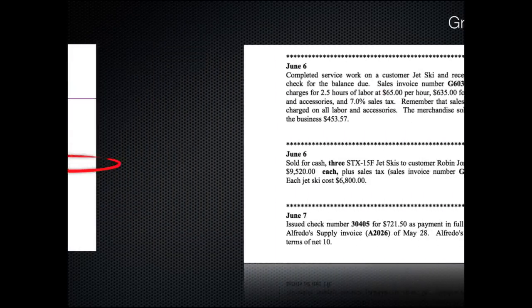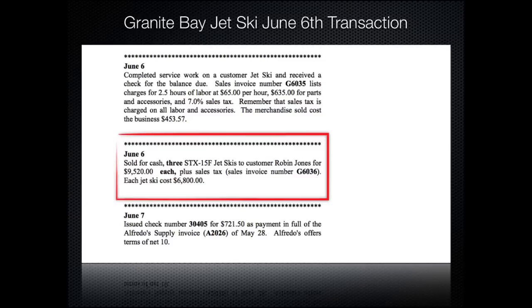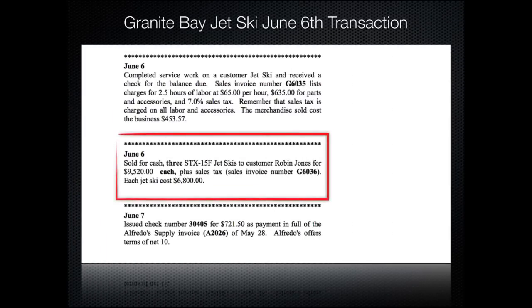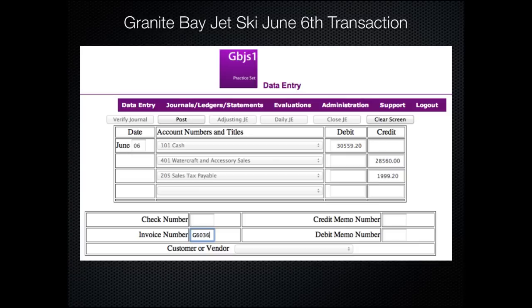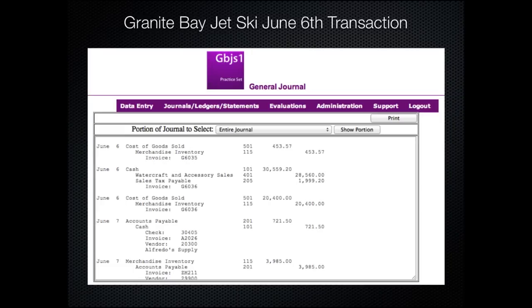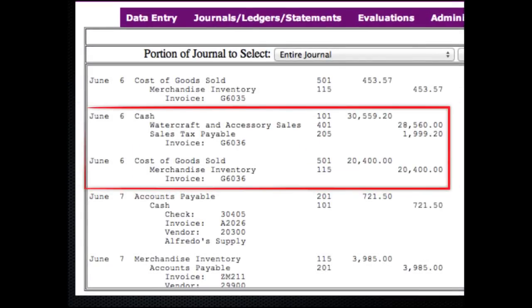Students are walked through the first entries of the practice set. This page from the first week of transactions shows the handbook information the student has for the June 6 and 7 journal entries. Here is a detail for a product sale that has been recorded in just a few seconds by the student. This is the journal entry as it appears in the general journal. When the student clicks on the post button, the system records a sale automatically and enters the update entry for the increase in cost of goods sold account and decrease in the merchandise inventory account.